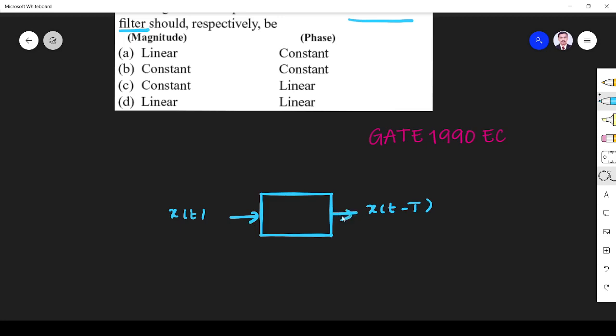This is input-output. I have to find what is the nature of this, so I need to find the magnitude and phase. I have to go for magnitude response, so I take the Fourier transform.